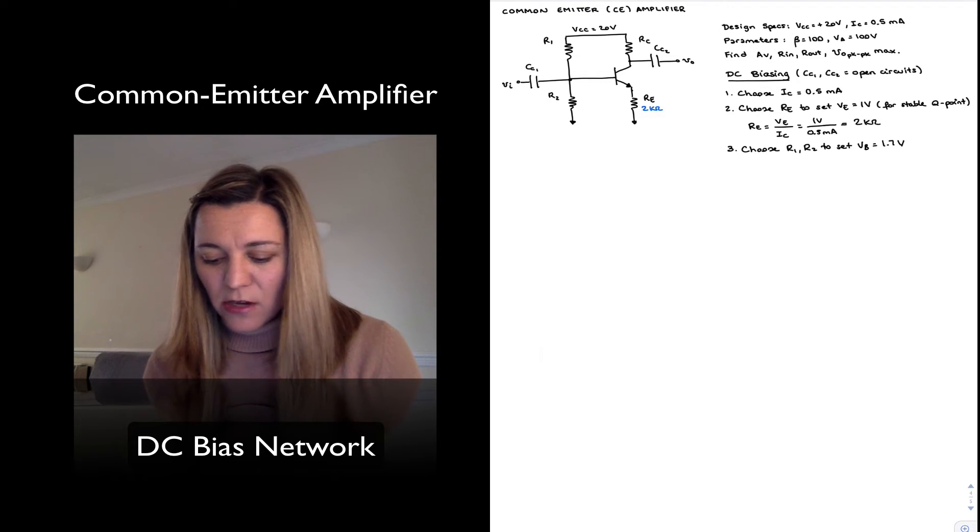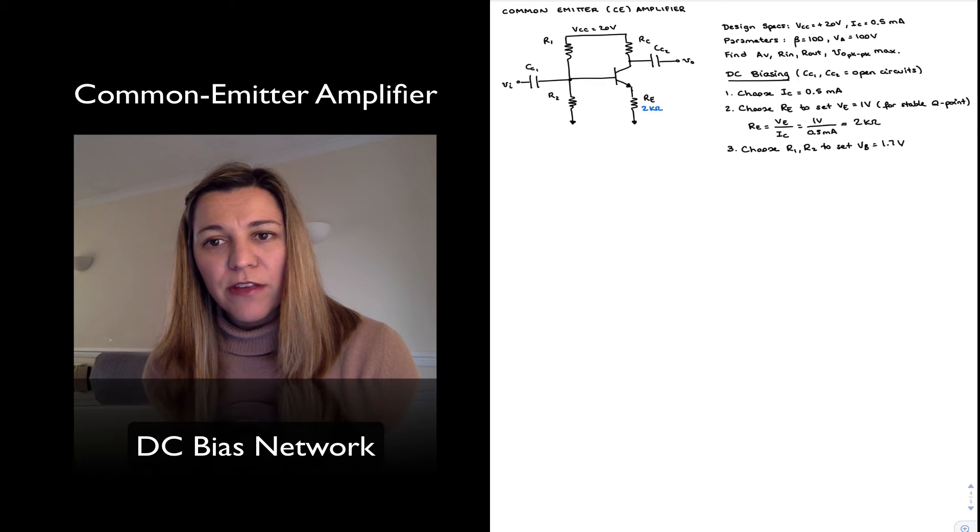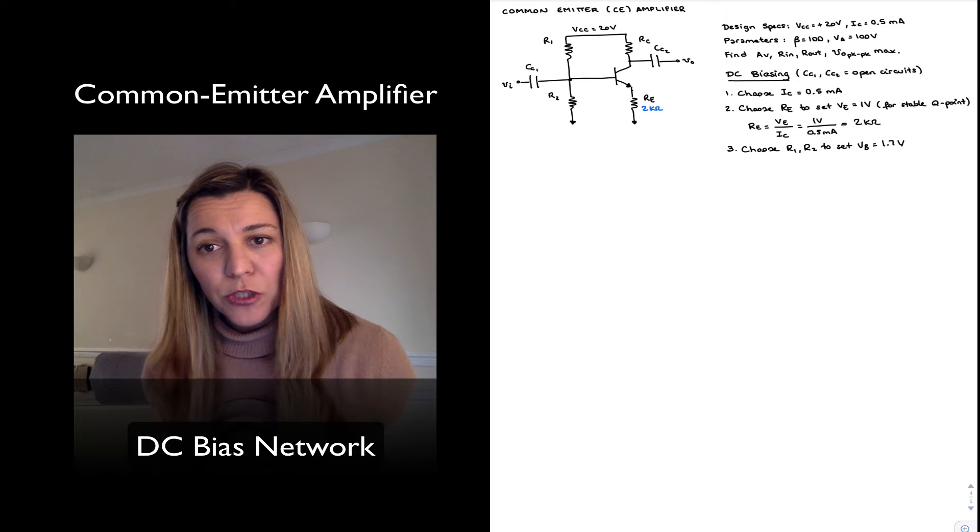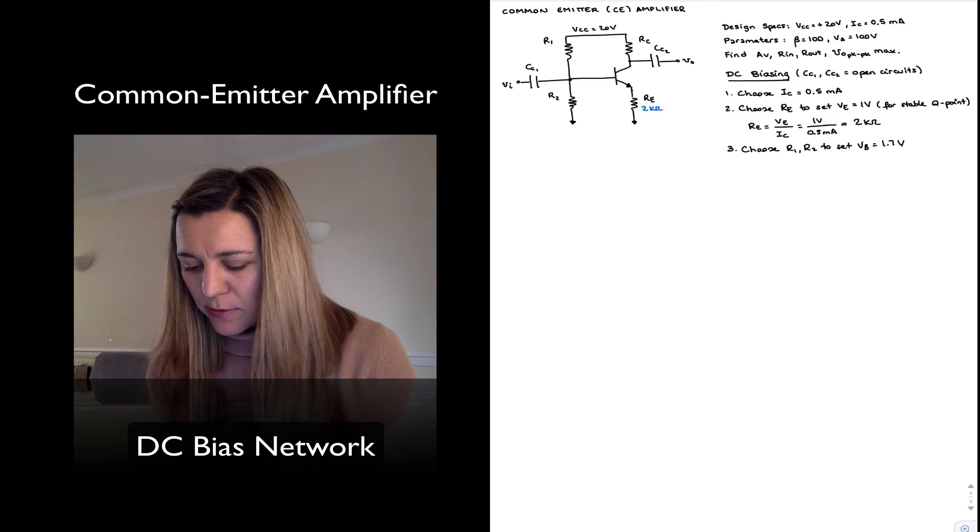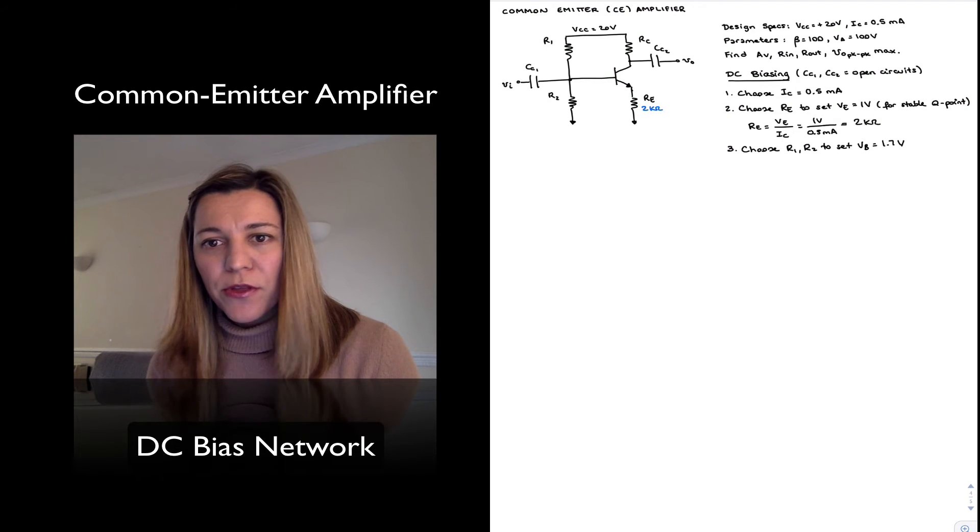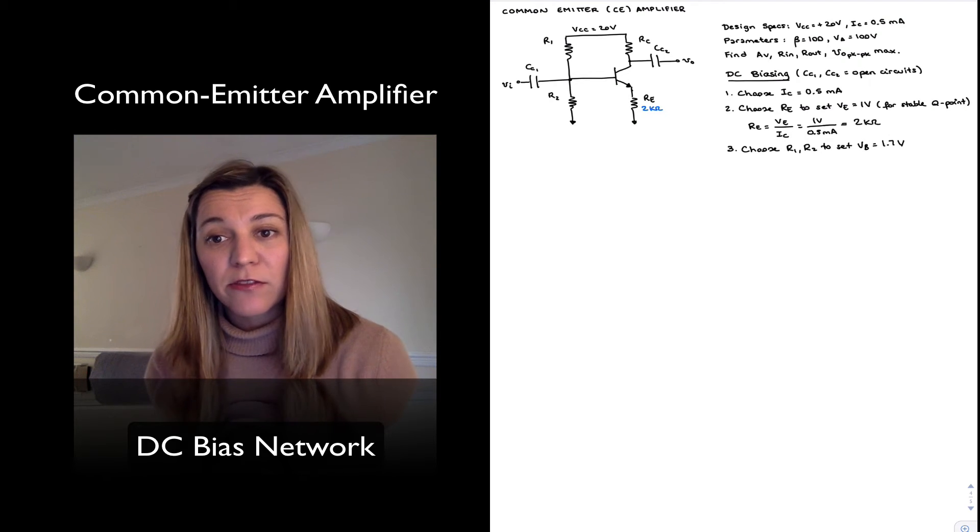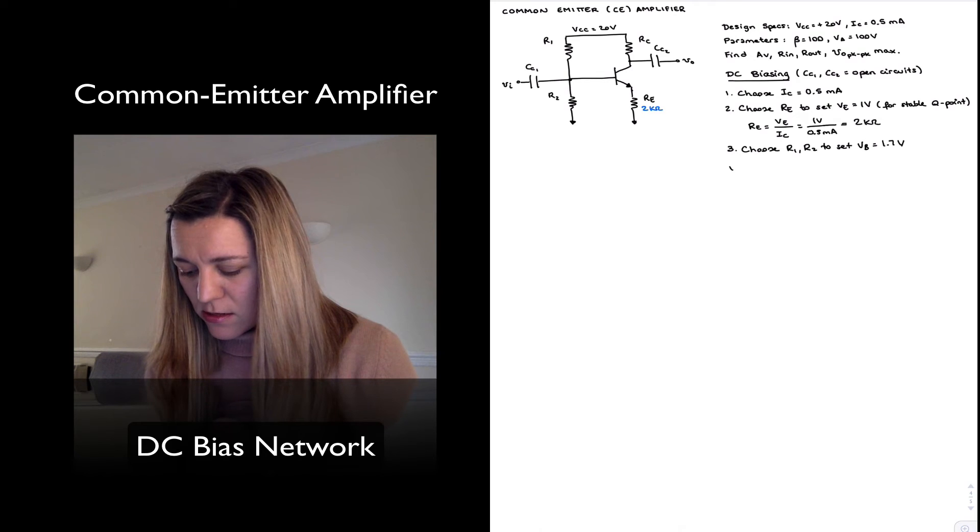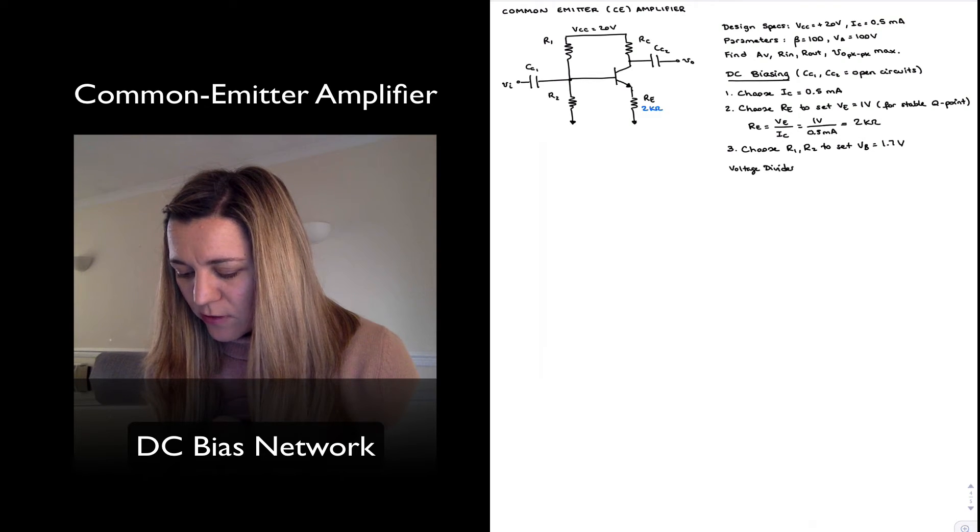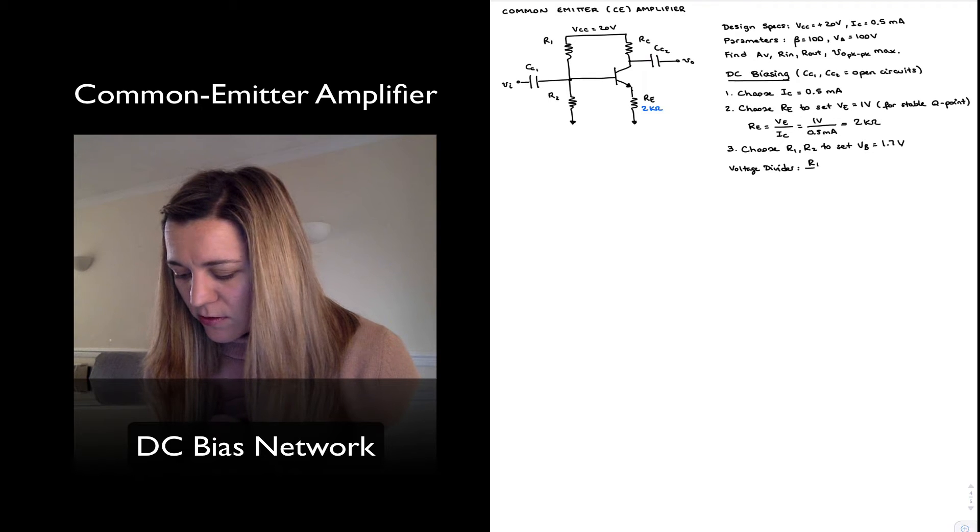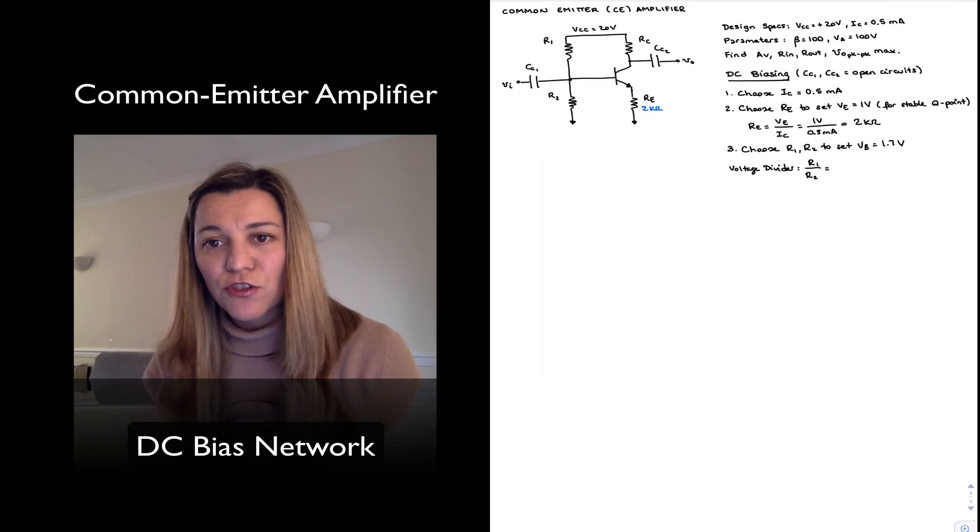And we can see that R1 and R2, we spoke about how they form a voltage divider network. That's why this is called a voltage divider biasing network. The amount of voltage across each one of the resistors, or the ratio of the voltages across the resistors, is going to be dictated by the ratio of those resistances. So because we have a voltage divider, we have that the ratio of R1 to R2 is going to be equal to the ratio of the voltages across R1 and R2.